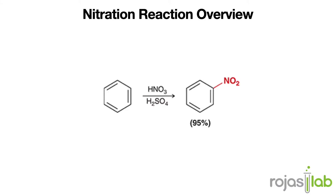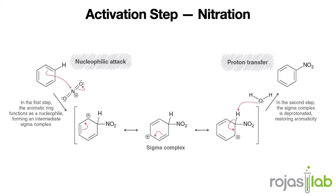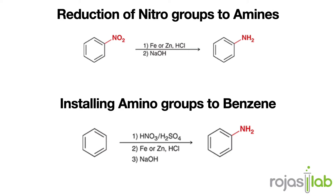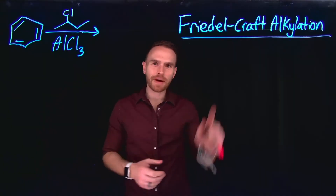The method of nitration can be used to install a nitro group on an aromatic ring. Once on the ring, the nitro group can be further reduced to give an amino group. Upon treatment with a metal — either iron or zinc — and hydrochloric acid, the nitro group is reduced. This process provides us with a general method for installing an amino group on a benzene ring.